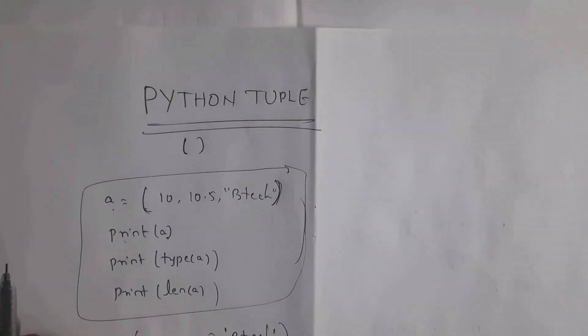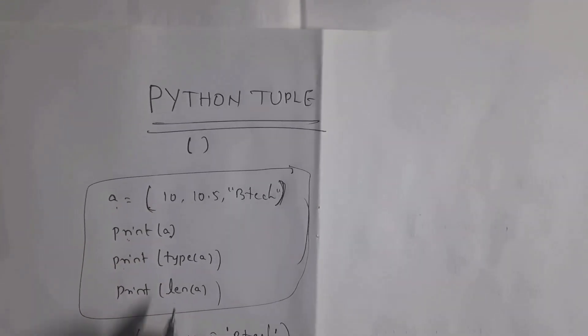Next, len function is used to count how many items are present inside the list. Total there are three items, so here I will get output three.